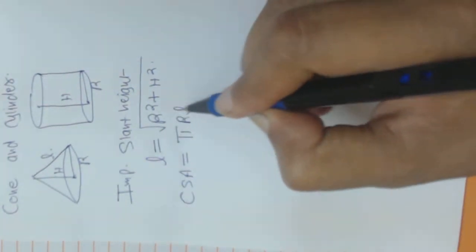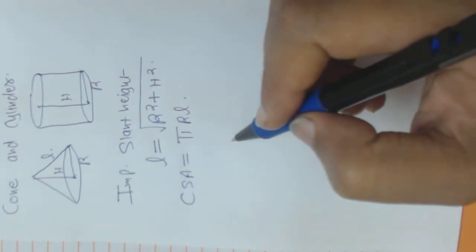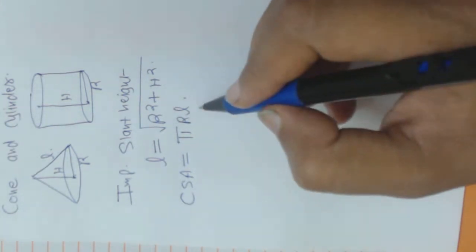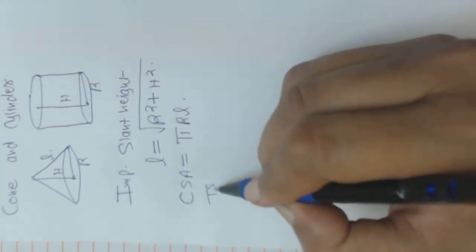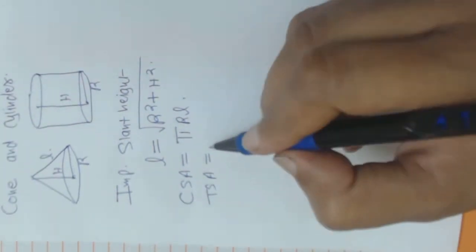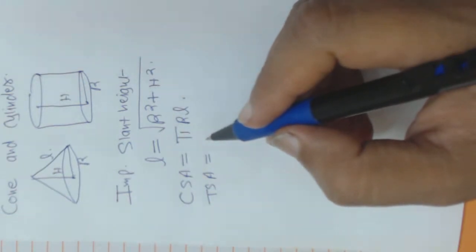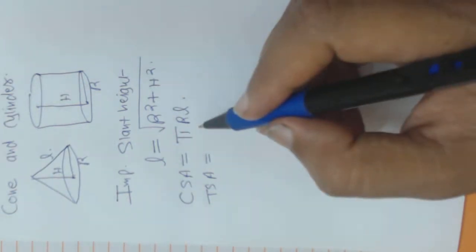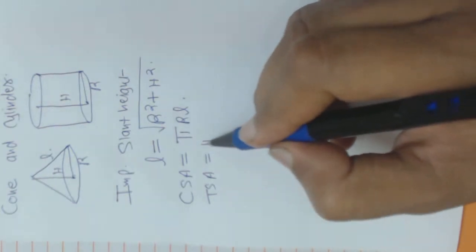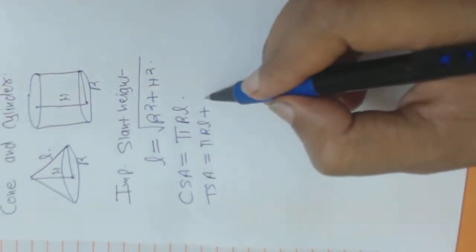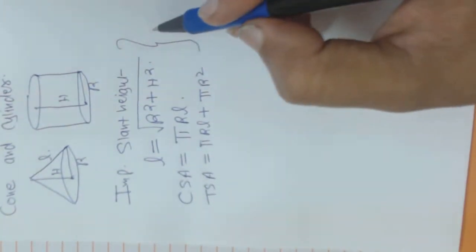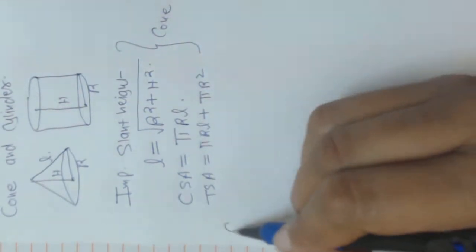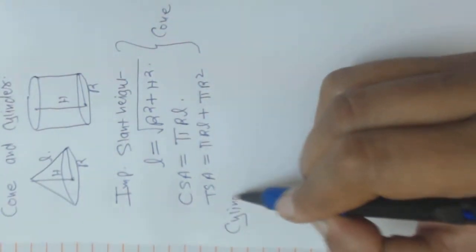So CSA is pi R L. Now sometimes we have to find out TSA. Only in small cases we have to find out the TSA; many of the cases we have to find out the CSA. Now TSA is nothing different but it is CSA plus pi R square. So this is for cone.